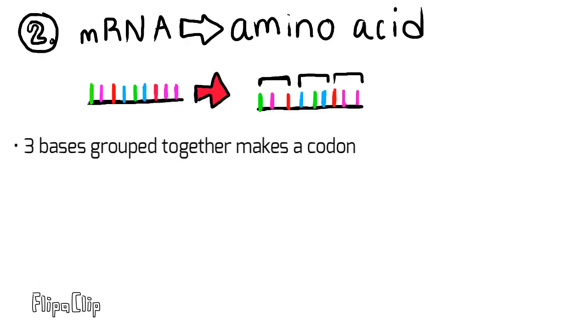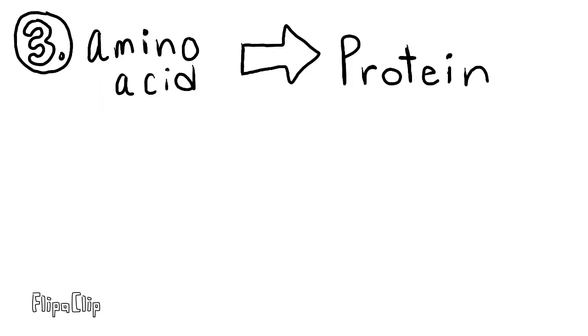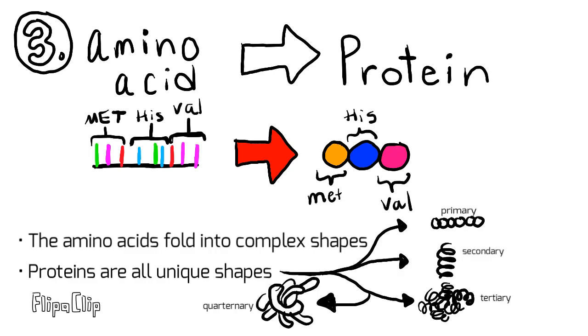The second step is translation. Codons, which consist of three base pairs, are translated into amino acids. The third step is where amino acids chain together to create proteins. The amino acid chains fold into complex shapes creating a unique protein.